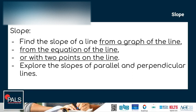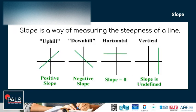Let us first define what is a slope. Slope is a way of measuring the stiffness of a line. Looking at the different graphs on the screen, you will see we have uphill, which represents positive slope. We have downhill, which represents negative slope. Horizontal, which means the slope is zero. And we have vertical lines, which means the slope is undefined.